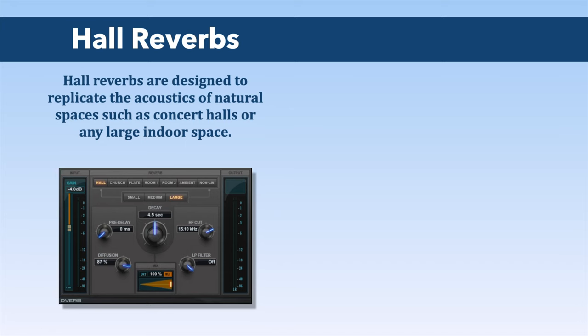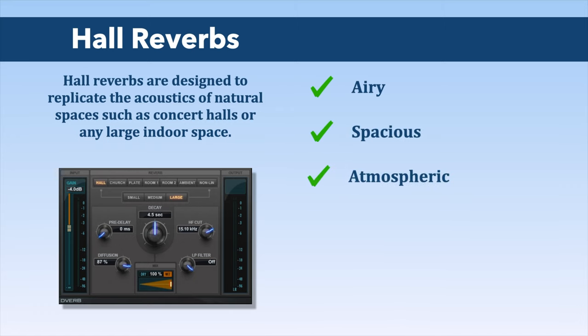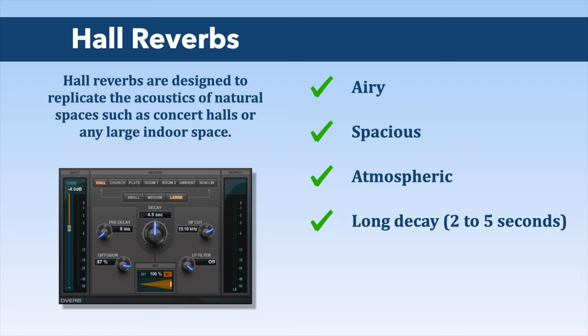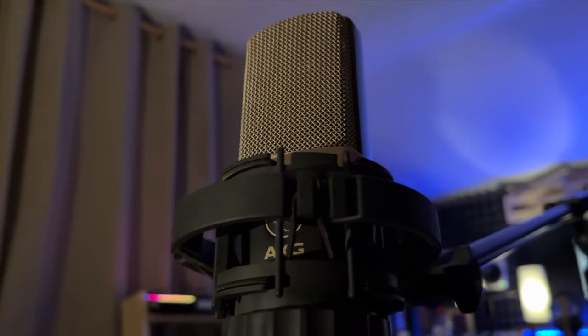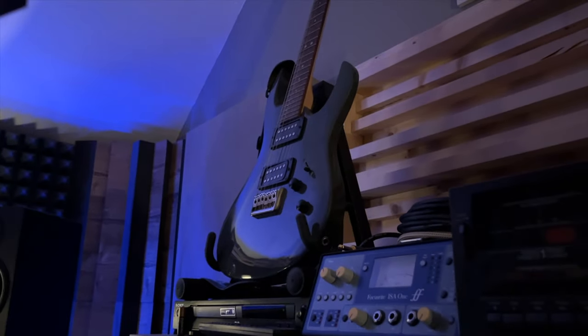Let's start with the most popular type of reverb: the hall reverb. Hall reverbs are designed to replicate the acoustics of natural spaces such as concert halls or any large indoor space. They are known to be very airy, spacious, and sometimes even atmospheric. Hall reverbs very often have a long decay — most hall presets found in popular reverb plugins are between two and five seconds.